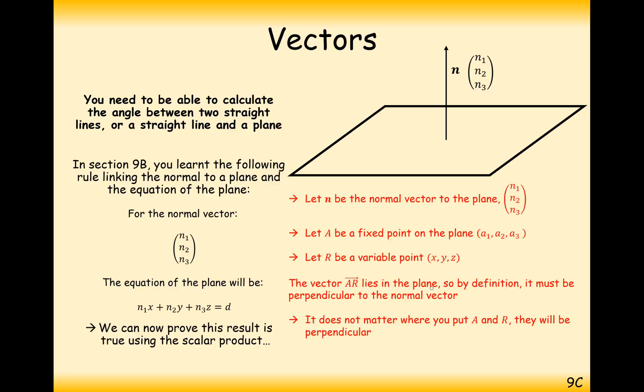The vector a to r lies on the plane, so it's a straight line that goes along the plane in all points. So by definition, it must be perpendicular to the normal vector.